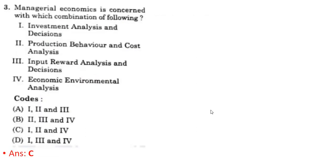Third question: managerial economics is concerned with which of the following combination? The correct combination is C, which includes: one — investment analysis and decision; two — production behavior and cost analysis; and four — economic environmental analysis. So the correct answer for the third question is C, that is options one, two, and four.